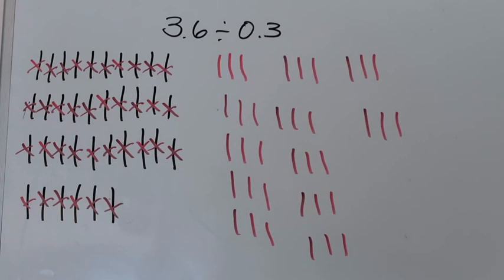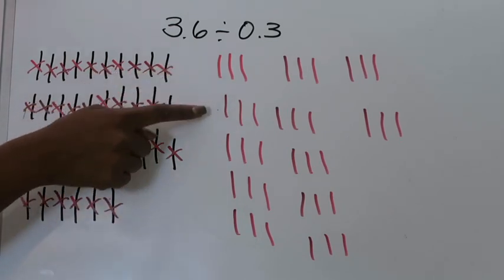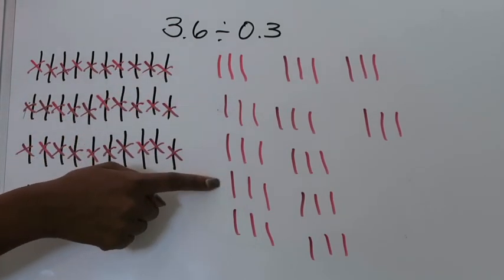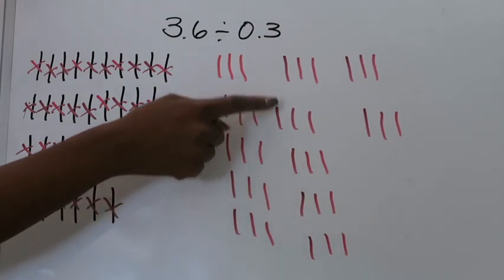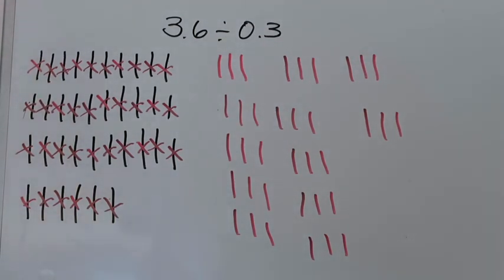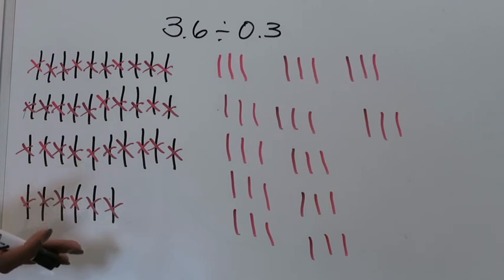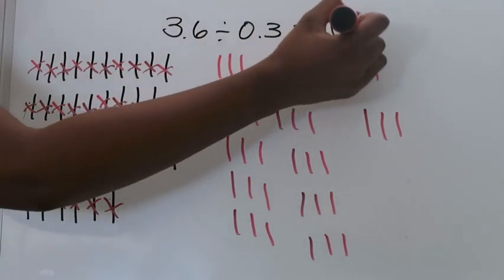Now that I've done that, I need to count how many groups of three tenths I was able to create: 1, 2, 3, 4, 5, 6, 7, 8, 9, 10, 11, 12. I was able to create 12 groups of 3 tenths when I had a total of 3 and 6 tenths, or 36 tenths. So that tells me my quotient for 3 and 6 tenths divided by 3 tenths is 12.